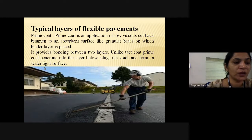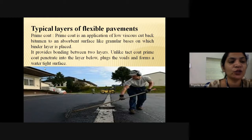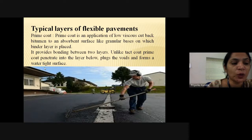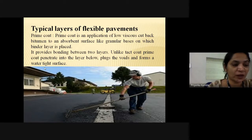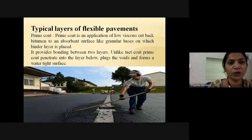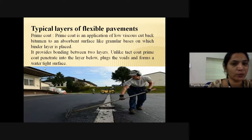When an asphalt emulsion is used as a prime coat, it should normally be applied at a temperature between 120°F and 160°F. When an asphalt binder is used, it should normally be applied at a temperature between 275°F and 325°F.